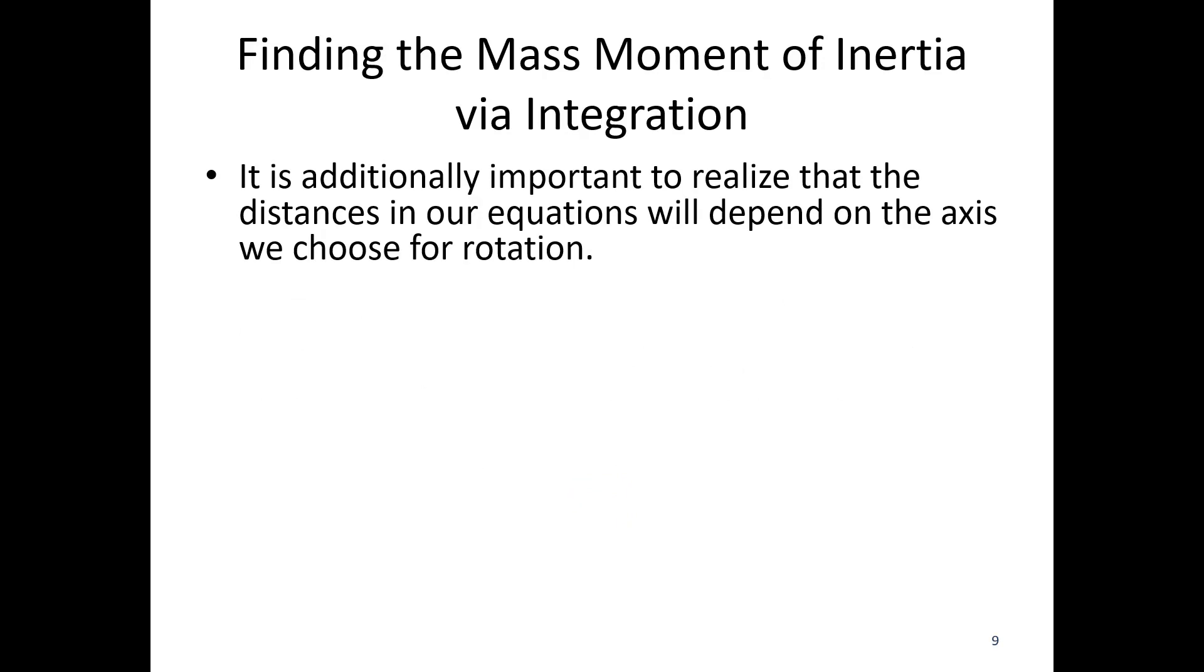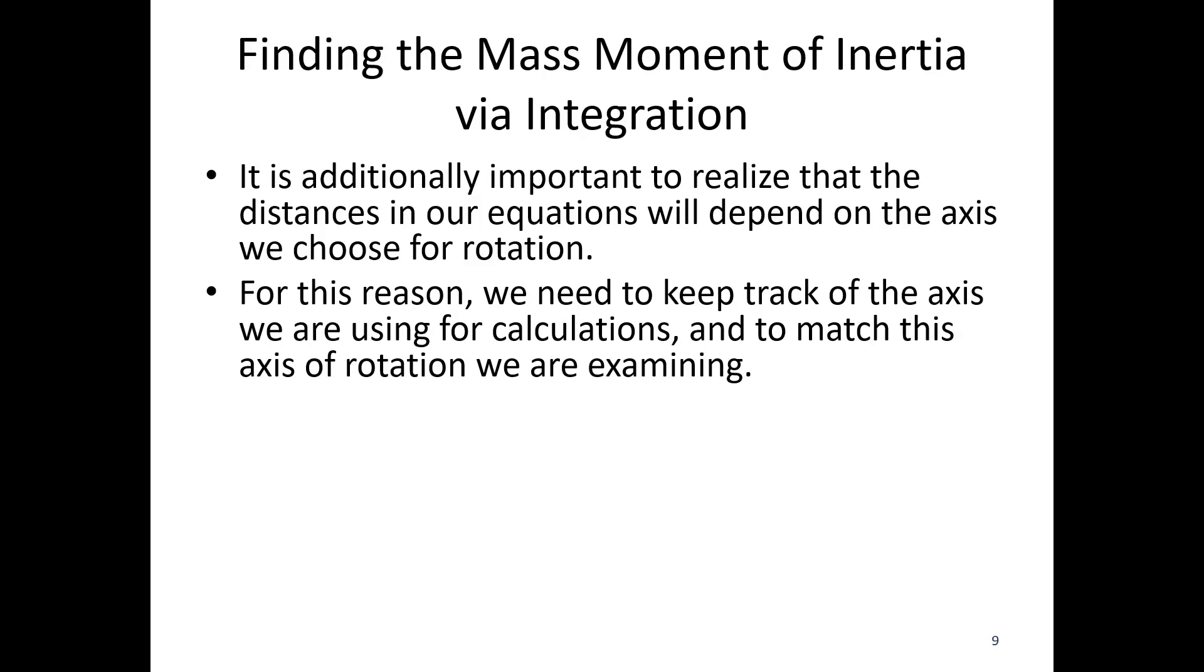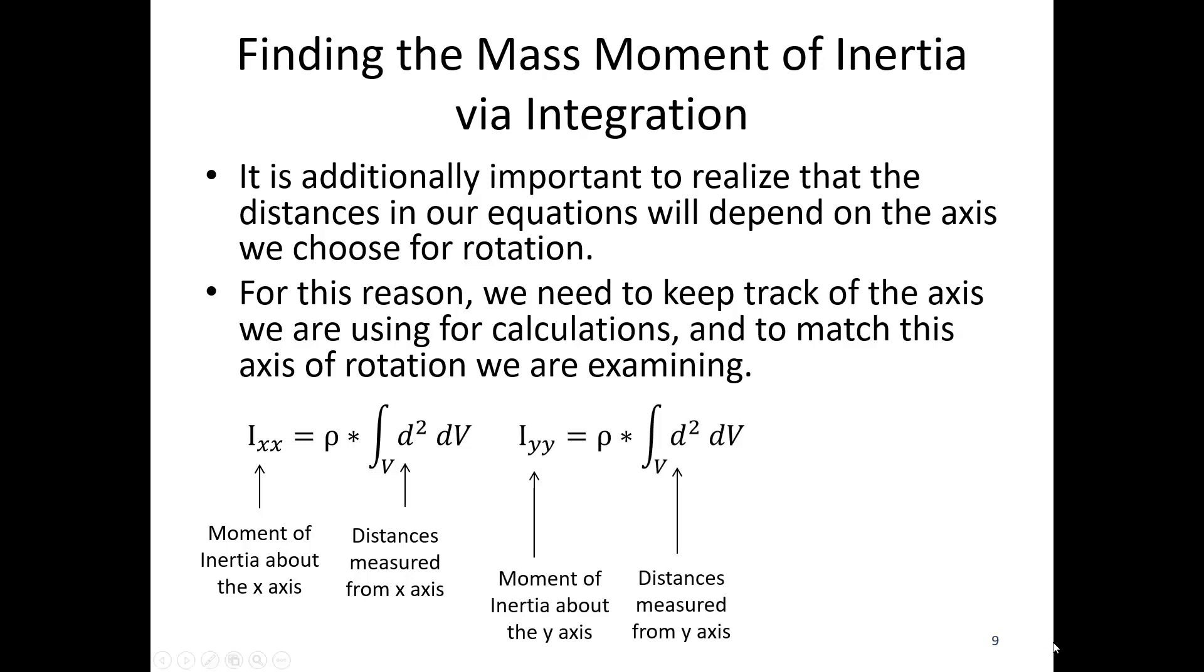So it's additionally important to realize that the distances in our equations are going to depend upon the axis of rotation. This is going to be important just like we had earlier with our demonstration with a broomstick. Choosing your axis is going to be important. And we need to keep track of the axis we're using for calculations and match this to the axis of rotation we are examining. So we would have the moment of inertia about the x-axis, which we'd call Ixx. And these are going to be distances from the x-axis. So we're radiating out from the x-axis. I could do the same thing for the y-axis, but these distances are going to be different. That distance equation is going to be different. And the same thing for the z-axis. So I'm radiating out from whatever axis I am taking the moment of inertia about.